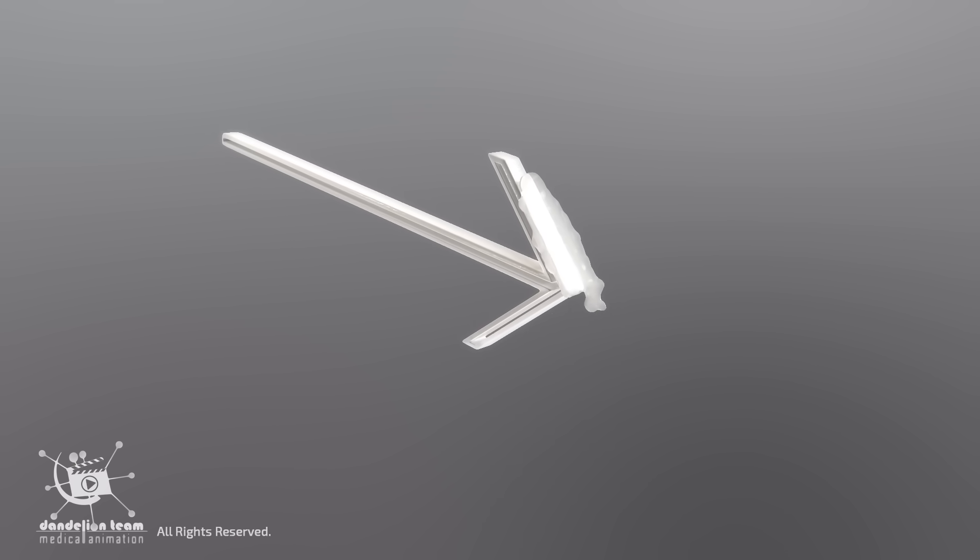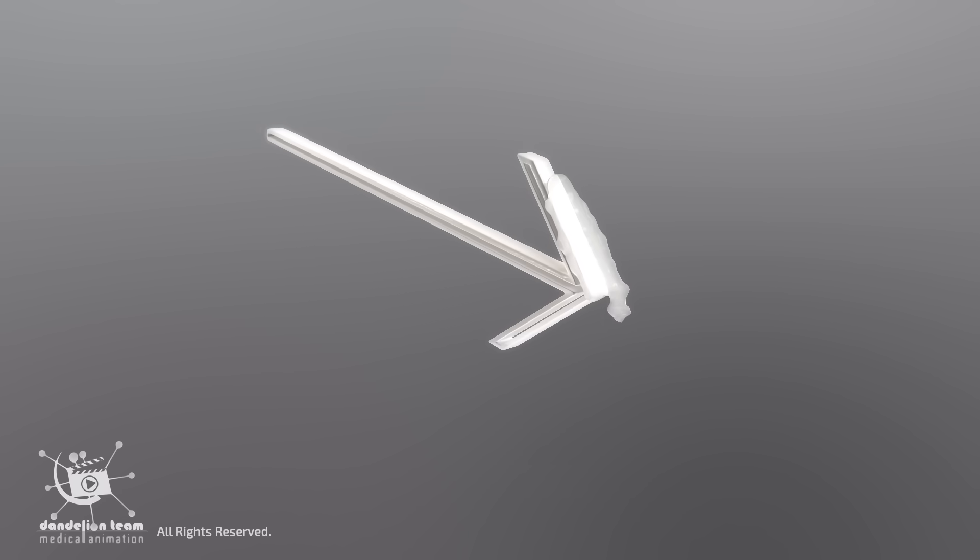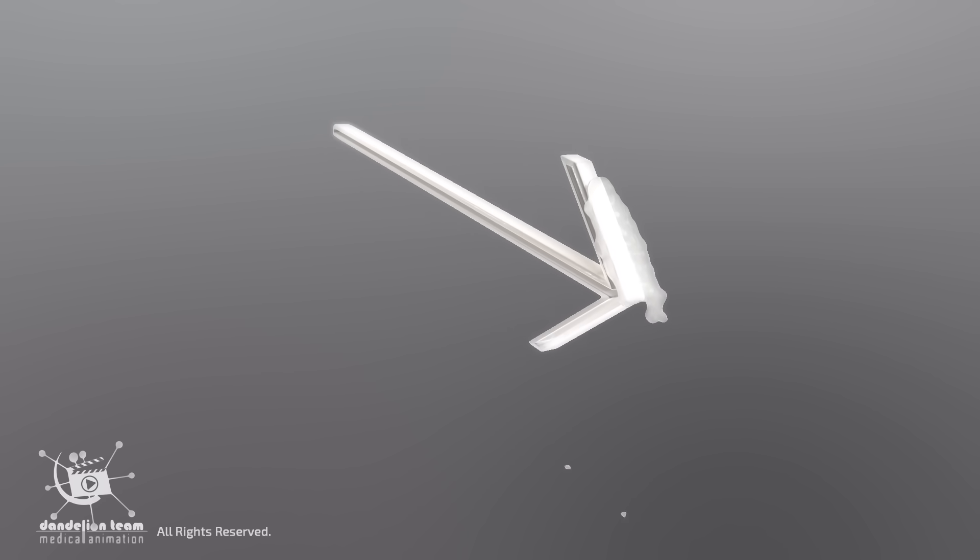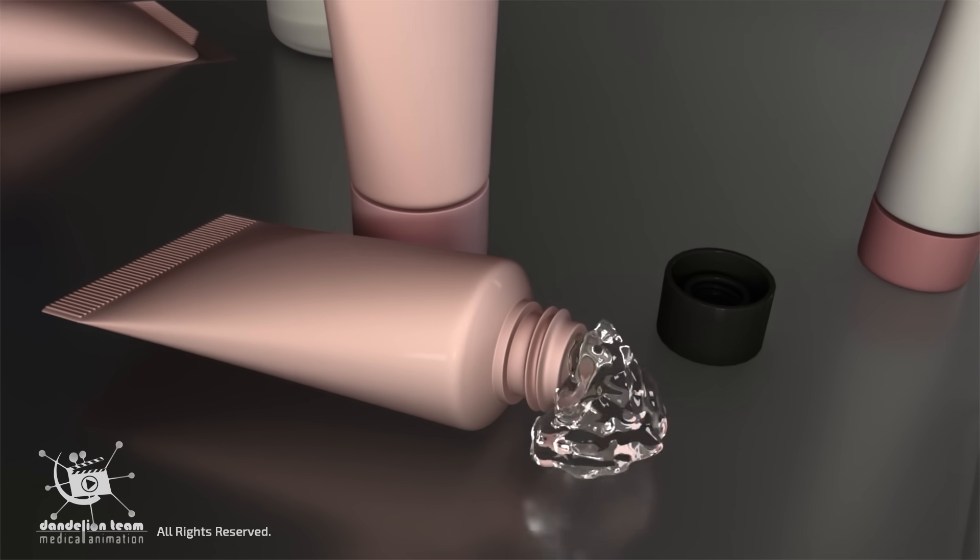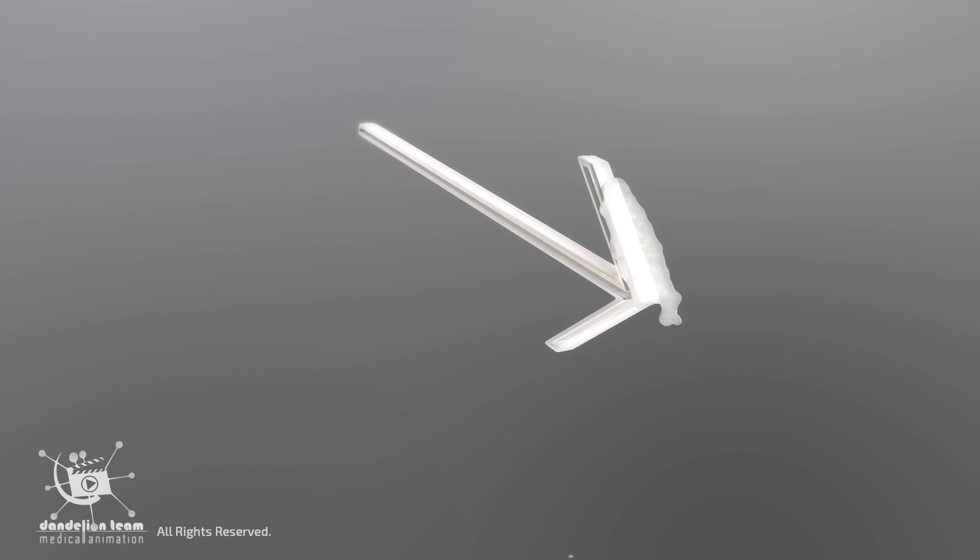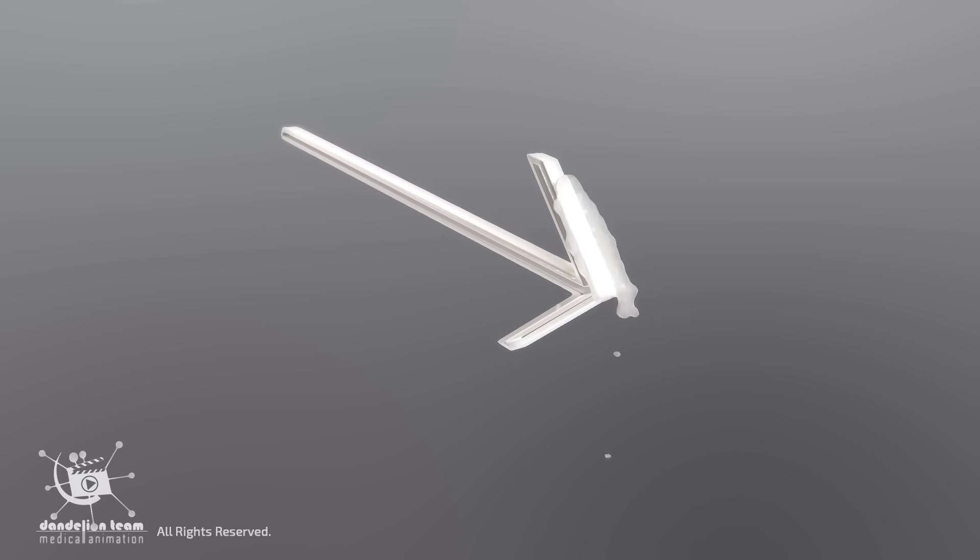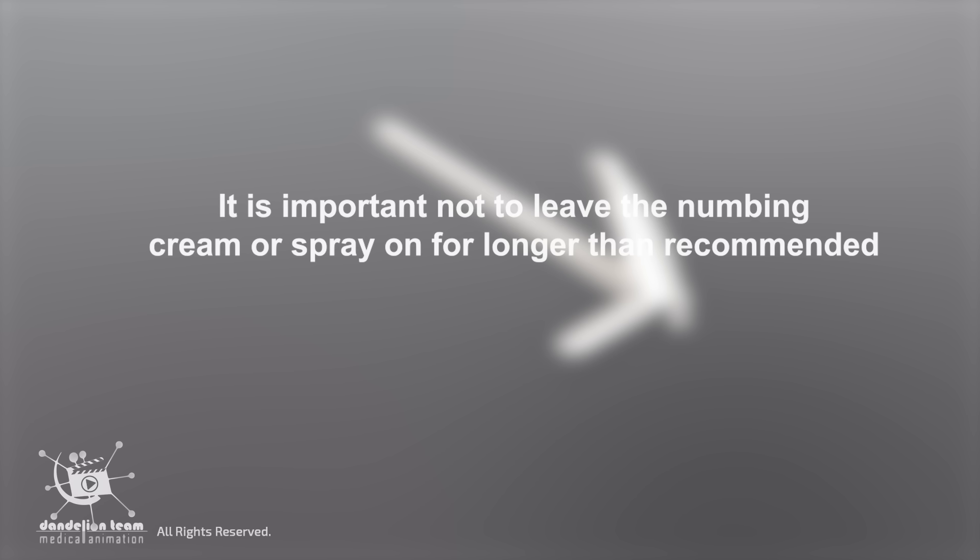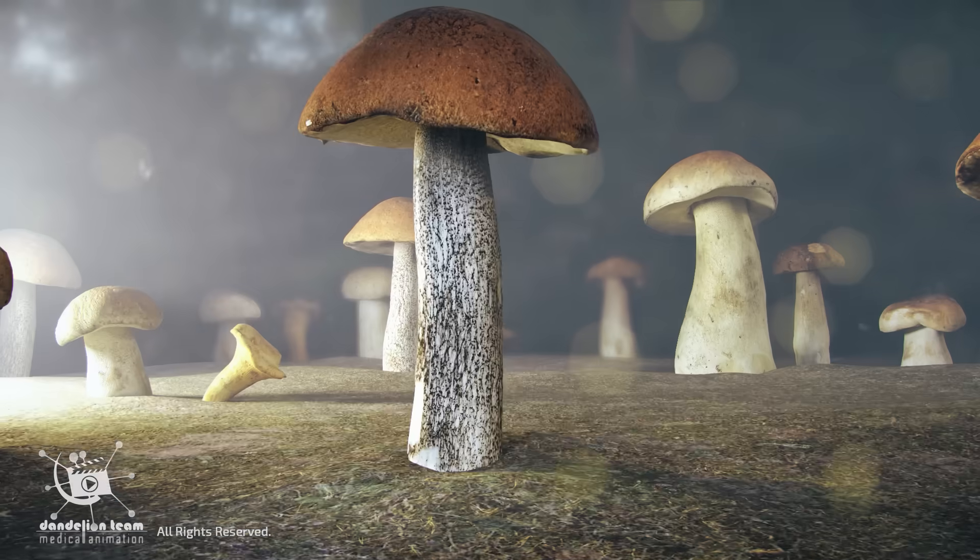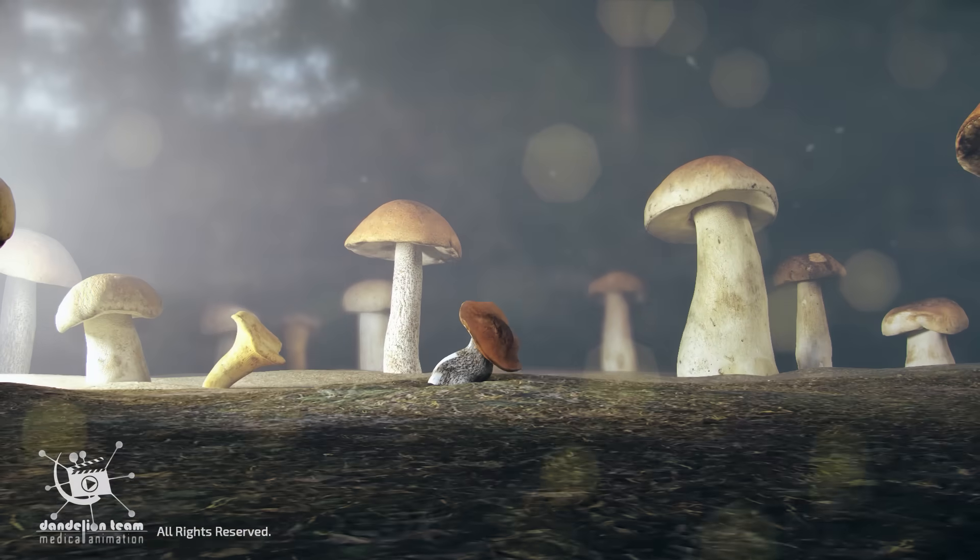topical anesthetic creams or sprays applied to the penis can help reduce sensitivity and delay ejaculation. Numbing creams and sprays can be applied to the head of the penis approximately 20 to 30 minutes before sexual intercourse. It is important not to leave the numbing cream or spray on for longer than recommended, as this may cause the erection to subside.